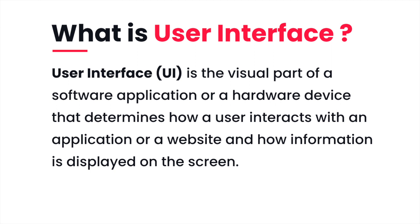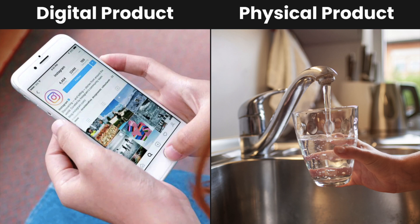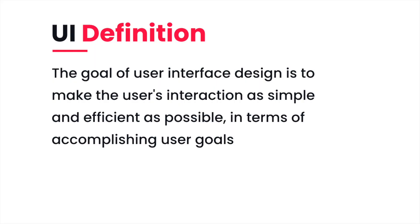This is another definition of UI. User interface design is a combination of content — any document, text, images, videos, etc. — forms like buttons, labels, text fields, checkboxes, dropdown lists, and behavior. These together make up a user interface, through which a user can interact with an application or hardware device. The goal of user interface design is to make the user interaction as simple and efficient as possible in terms of accomplishing user goals.